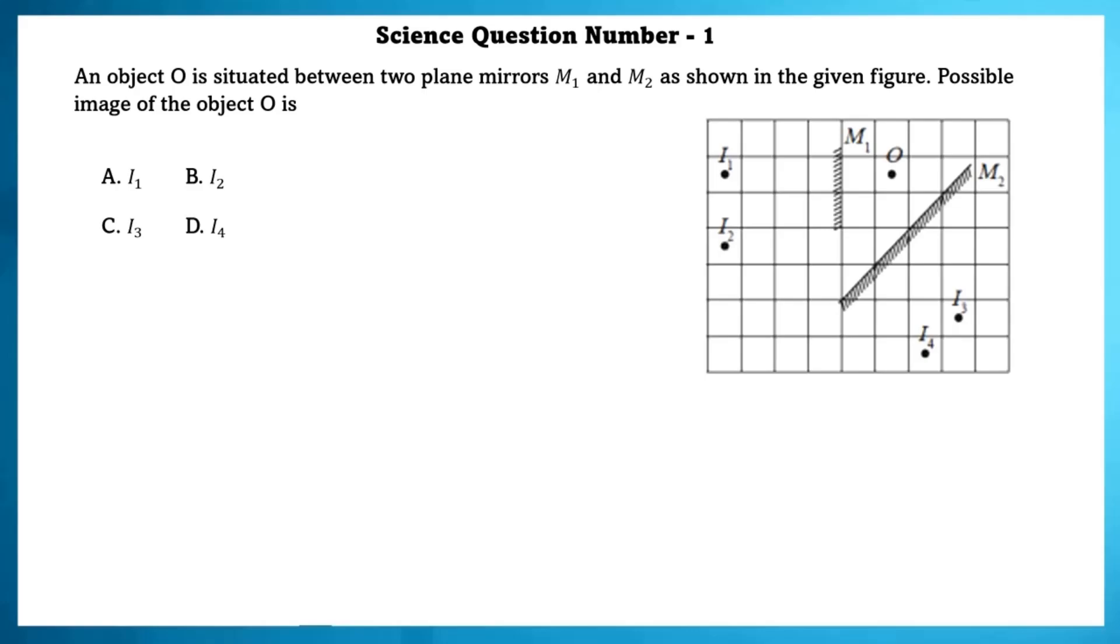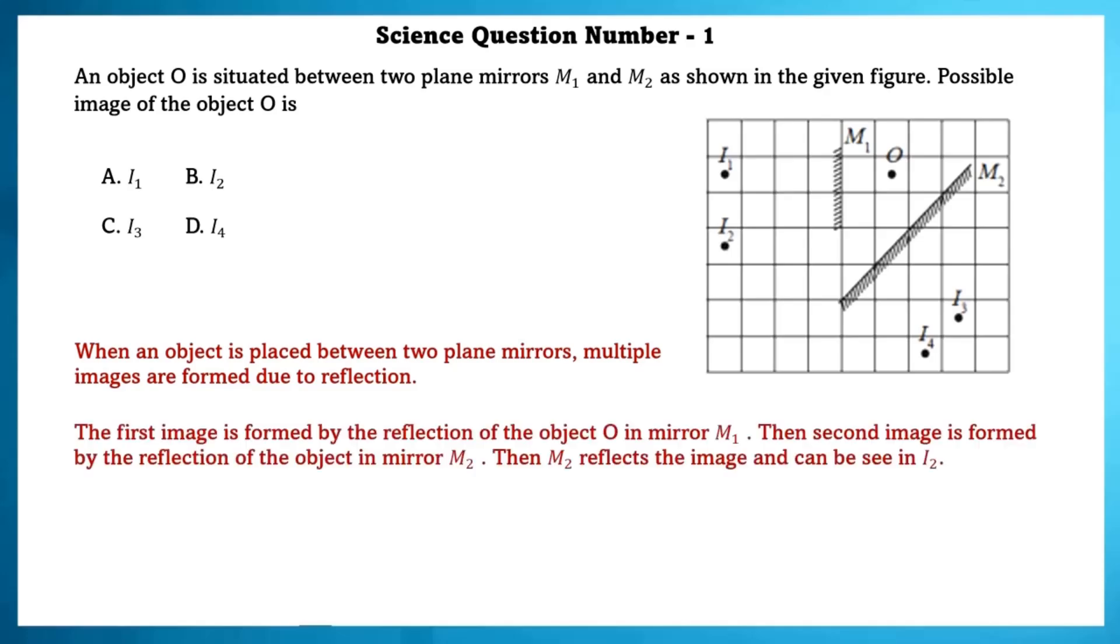An object O is situated between two plane mirrors M1 and M2 as shown in the given figure. Possible image of the object O is: When an object is placed between two plane mirrors, multiple images are formed due to reflection. The first image is formed by the reflection of the object O in mirror M1. Then M2 reflects the image and can be seen in I2.